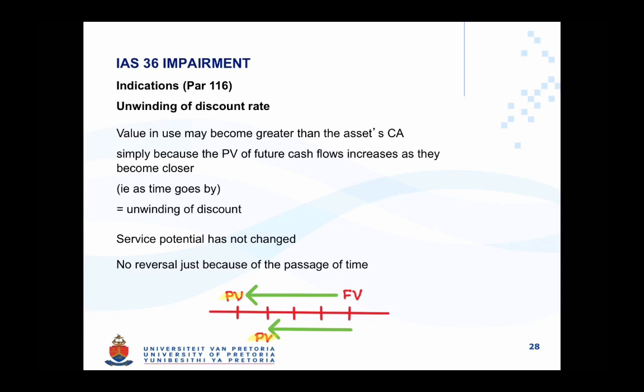The reason for this will be the additional finance costs for the time period that has already elapsed. No other variable has changed in our calculation of value in use other than the fact that time has elapsed one period further on. This is known as the unwinding of discount, and this cannot lead to a change in the impairment loss or a recovery thereof, because none of the estimates used in the calculation has changed — the discount rate and cash flows have remained the same.